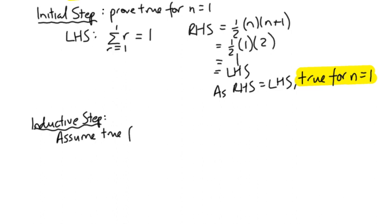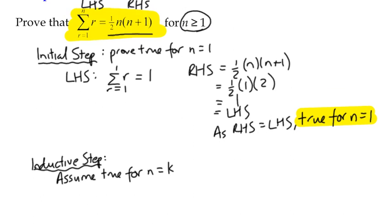Assume true for n equals k. Now, because we're assuming it to be true, what we do is we rewrite the formula, this whole thing up here. And where n appears, we're going to write k. So all we're doing is stating a formula, we're stating that sigma r from r equals 1 to k is equal to a half times k times k plus 1. And you see, every time n appears on either side, we're going to replace it with a k.